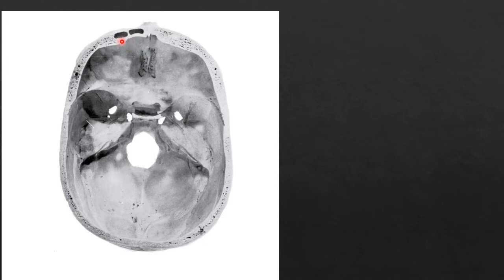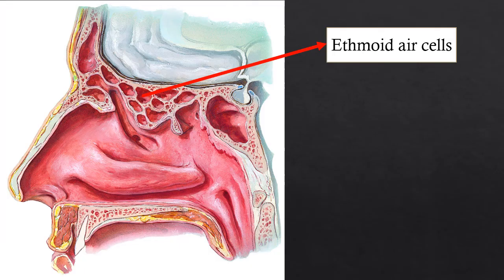Sometimes in the dry skull they may also ask regarding the frontal air sinus — here you can see this is the frontal air sinus. Then moving to the ethmoidal air cells, sometimes they may ask about this particular structure. If the specimen is very clear they may ask for the ethmoidal air sinus, or ethmoidal air cells as you can write it. That covers three of the air sinuses.